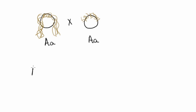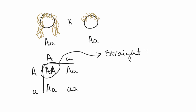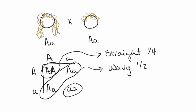When we do the cross and work out the Punnett square, we get one box with homozygous capital A, two boxes that are heterozygous, and one box with two copies of lowercase a. Looking at the phenotypes: one individual has straight hair — that's a quarter of the offspring. Two boxes show wavy hair — that's half. And one box gives us curly hair — that's a quarter. Notice that the phenotypic ratio is different compared to typical complete dominance crosses.